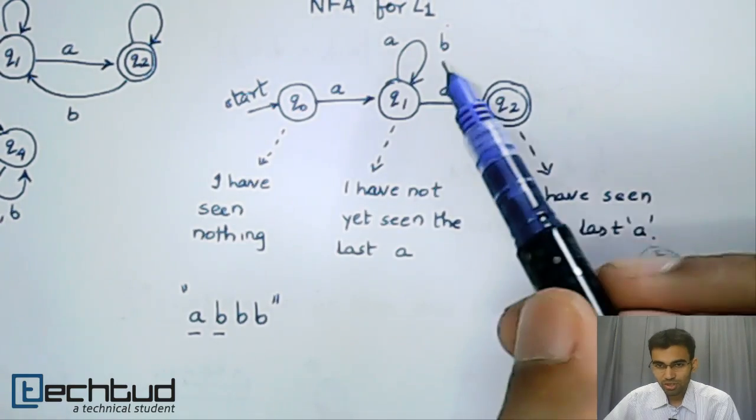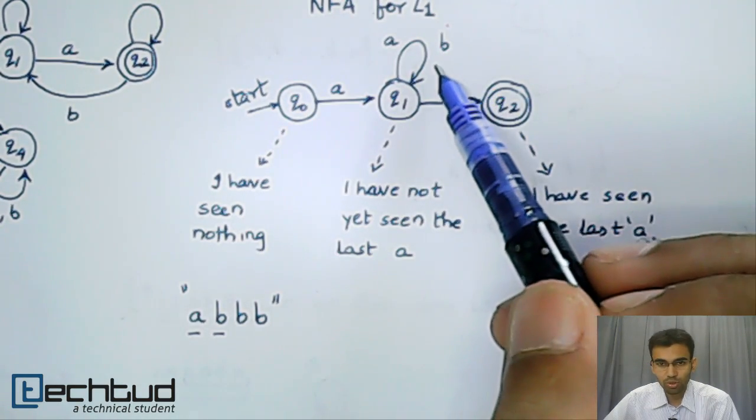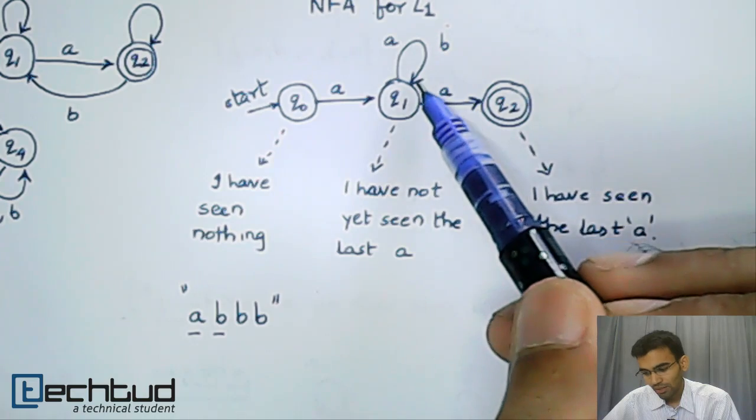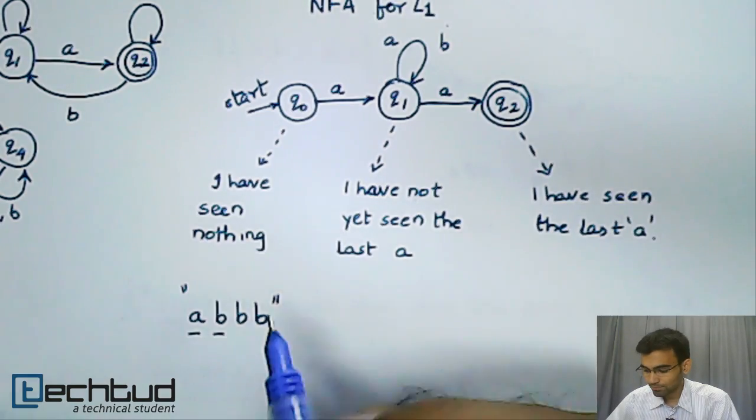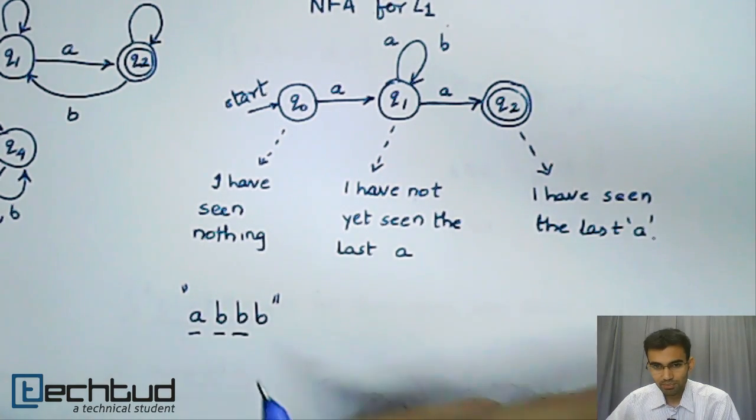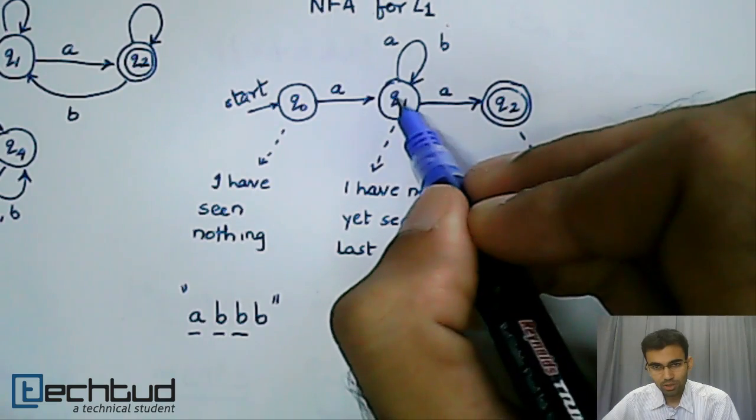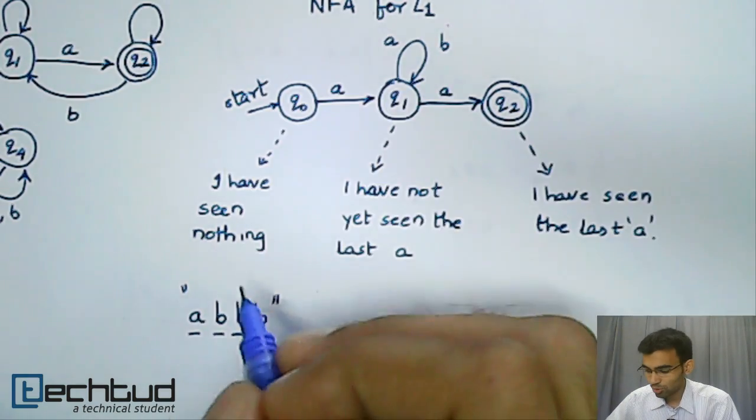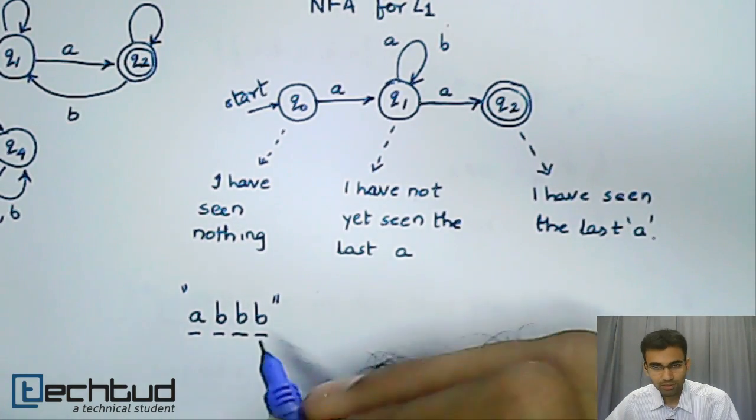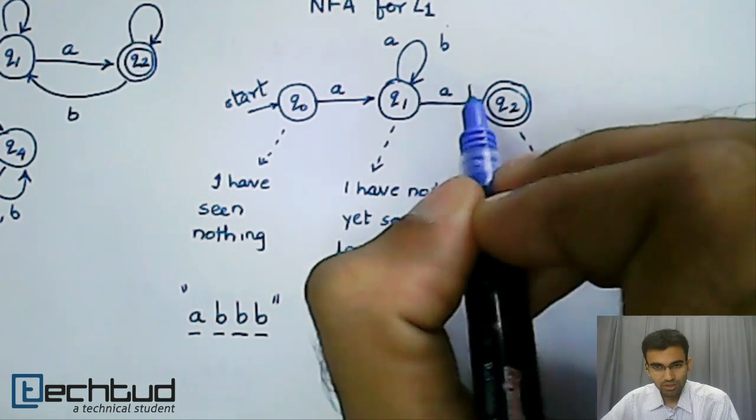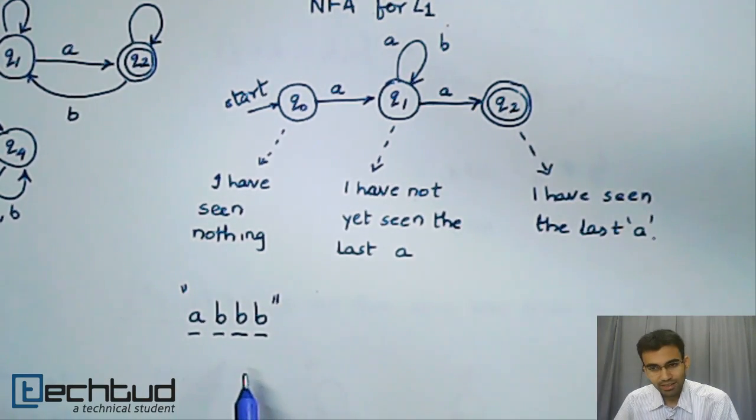There is no confusion and we take that transition which leaves us back in Q1. We read the next B, again no confusion, takes us back to Q1. We read the next B, no confusion, takes us back to Q1. But our string has ended.